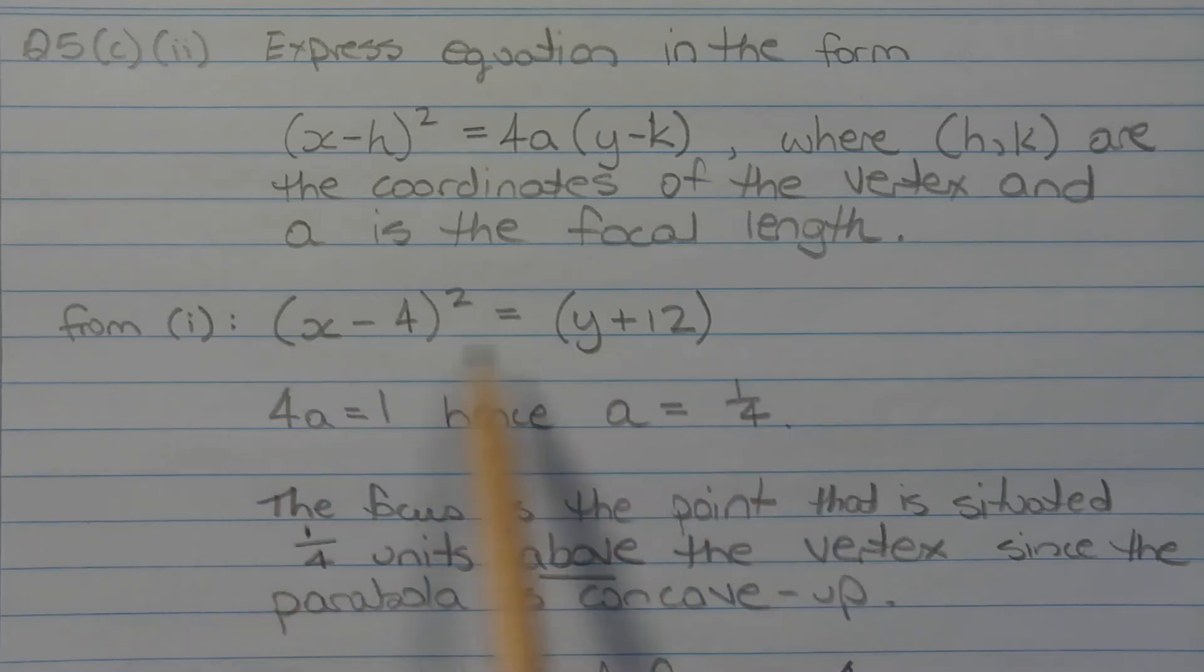Now, the equation is in the form x minus h squared equals 4a outside of y minus k. Now, this bracket here is being multiplied by 1 on the outside. In other words, 4a here must equal 1. So solving for a, the equation 4a equals 1, we get a is equal to 1 over 4. So the focus is the point that is situated 1 over 4 units or 1 quarter units above the vertex since the parabola is concave up.